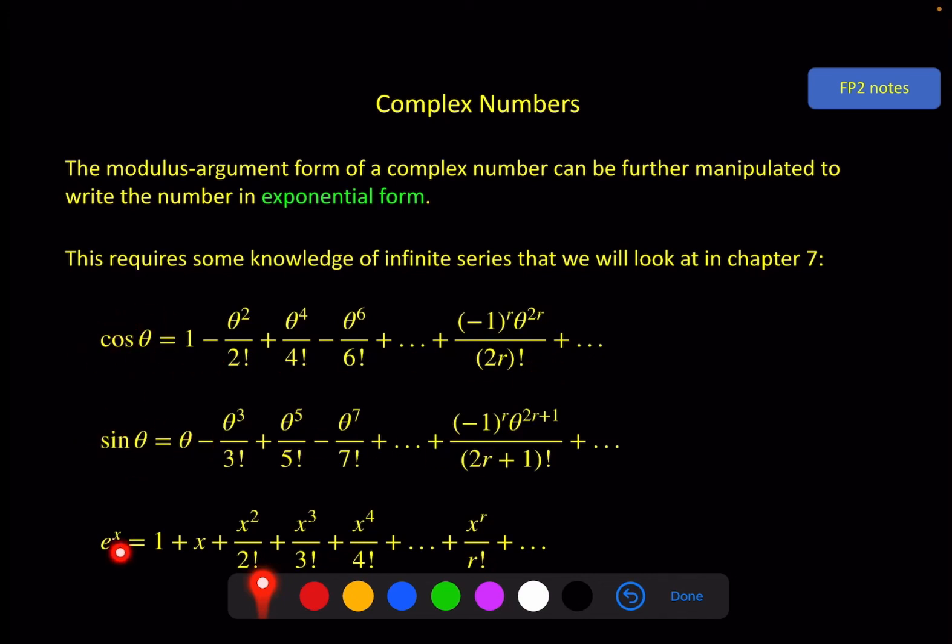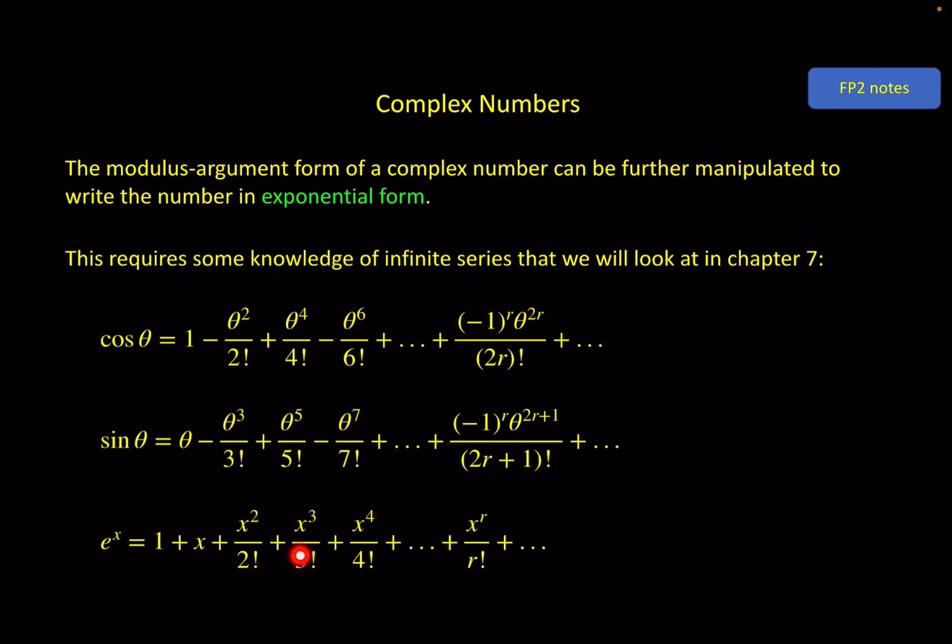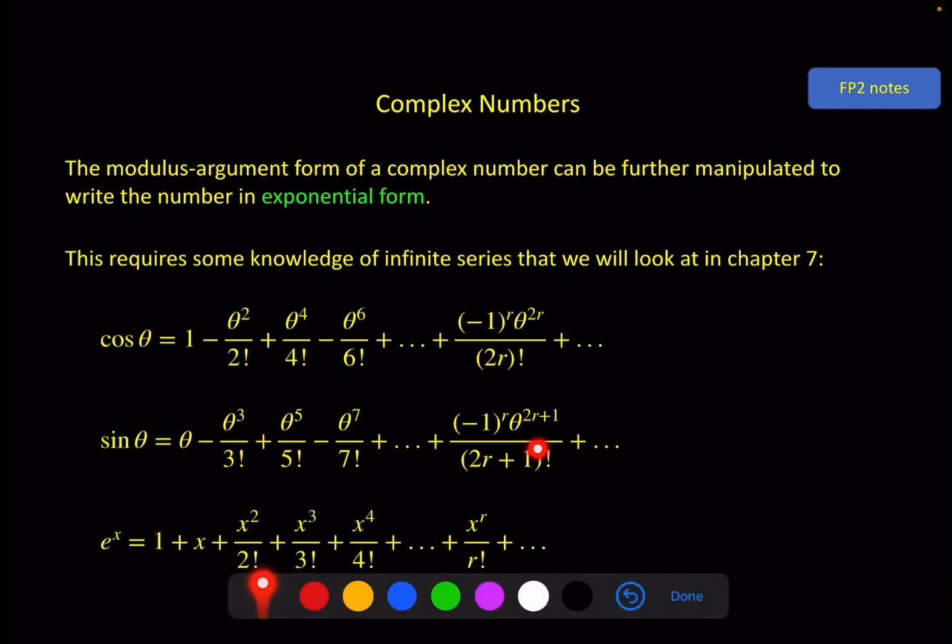And if you use x equals i theta and you write that out, you find that you can use sine theta and cosine theta on this side to replace all of this. Because all of this, when x equals i theta, gives you a combination of this and this. That's as far as I'll go into the background. You'll have to wait until chapter 7 if you really want to know where this all comes from.